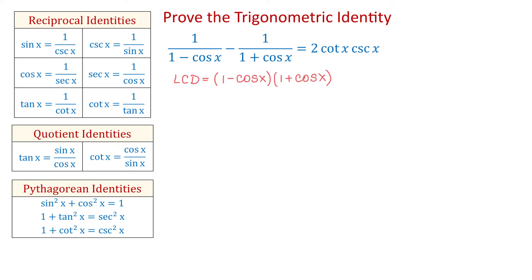In the first fraction, we will multiply both the numerator and the denominator by 1 plus cosine of x. So here we have the fraction 1 over 1 minus cosine of x, and now we will multiply the numerator by 1 plus cosine of x and the denominator by 1 plus cosine of x.